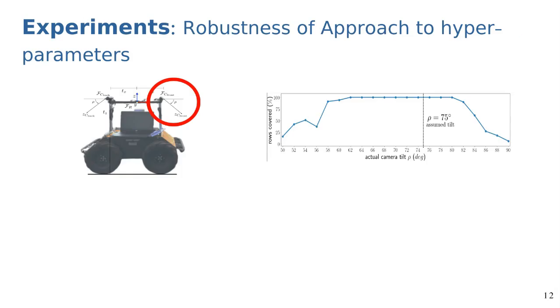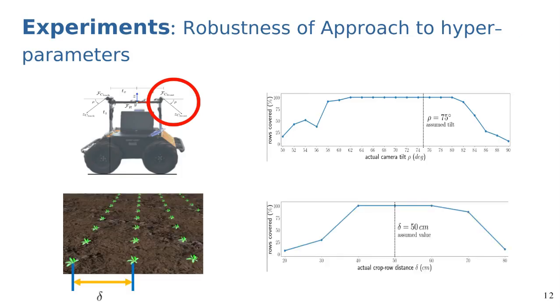We also evaluated the robustness of our navigation scheme to the critical parameters which need to be provided by the user. Both camera angle rho and crop row distance evaluation shows that our approach is able to have proper performance in a variety of configurations.